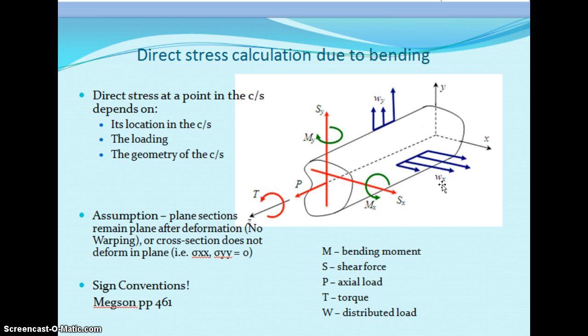Sigma equals My/I, where M and I directions are both the same, and the component direction of the distance y will be different. In direct stress calculation, if we apply any transverse load on the beam — regardless of the type of support — due to the transverse load, the bending moment will be created, and from the bending moment we can find out the bending stresses. So sigma equals My/I, where M and I are in the same direction and y is in the other direction.